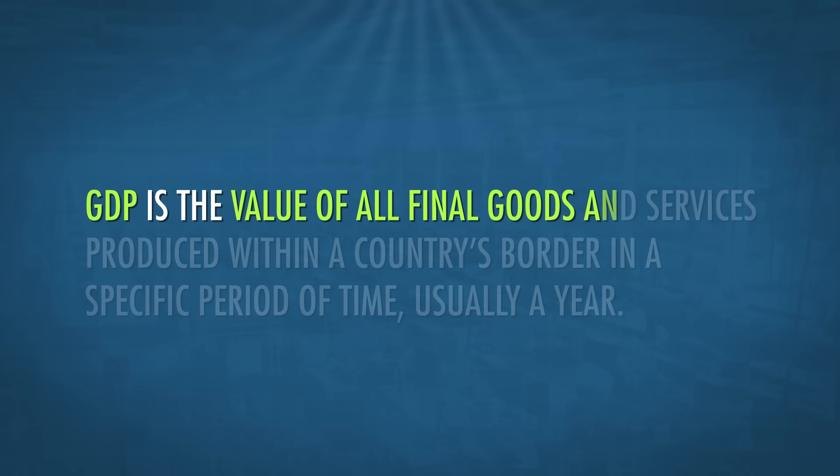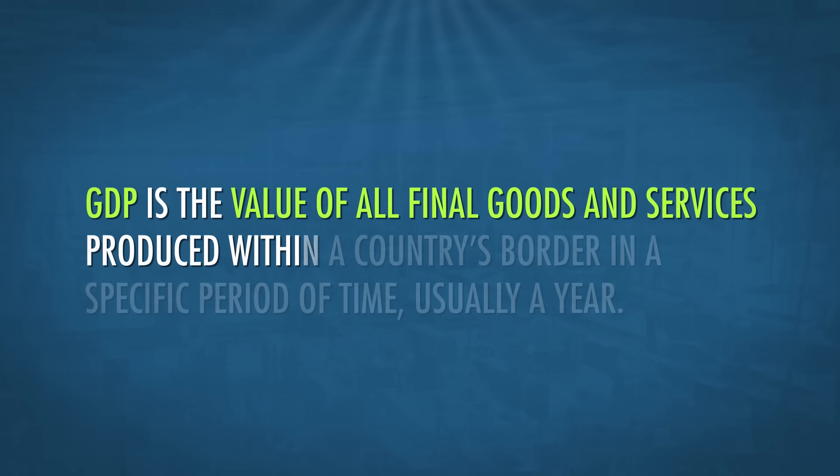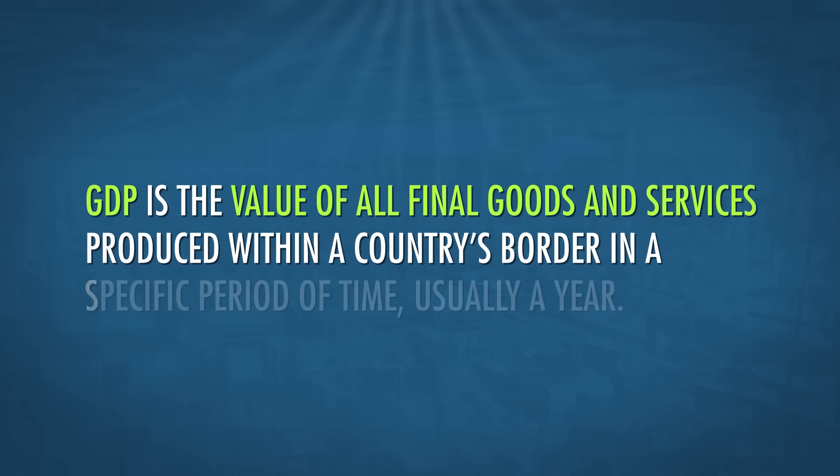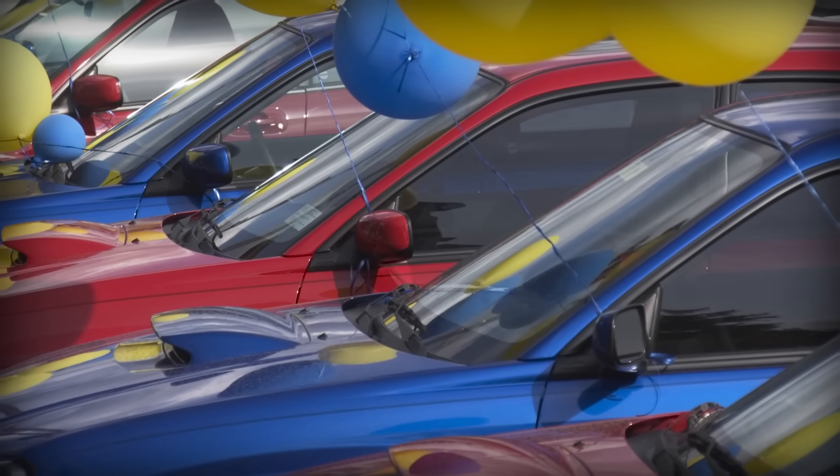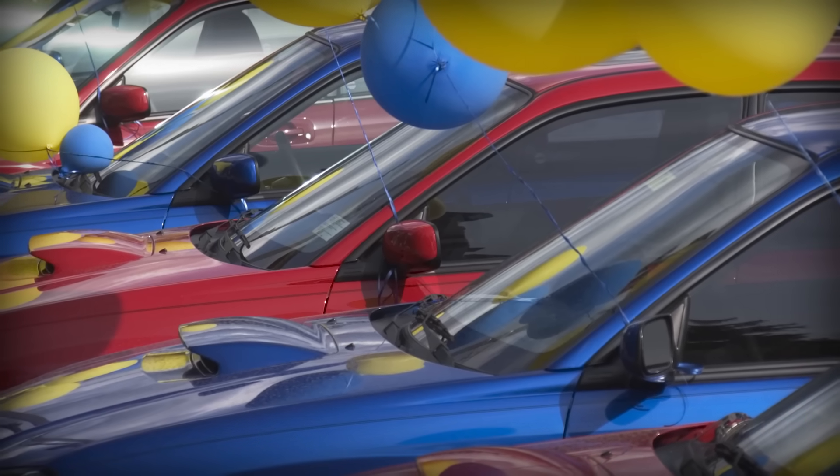They're the gross domestic product, unemployment rate, and the inflation rate. The most important measure of an economy is gross domestic product, or GDP. GDP is the value of all final goods and services produced within a country's border in a specific period of time, usually a year. GDP doesn't include every transaction in the economy — for example, if you buy a used domestic car, it doesn't count towards GDP because nothing new is produced.